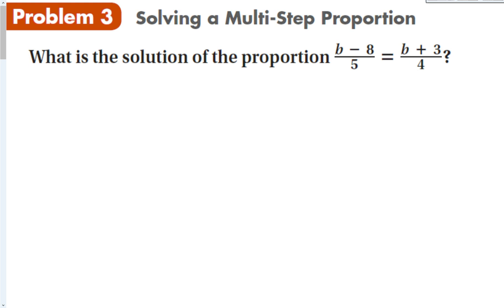Get into the habit, if you see a proportion, to use cross-products, especially if you have a proportion that looks like problem 3. This is a multi-step proportion. Cross-multiplying is the best way to solve this. It's going to be the most efficient way, and probably the only way that you could actually get to the answer. We're going to start with my equation, b minus 8 over 5 is equal to b plus 3 over 4. I'm going to multiply these two together first. That's going to be 4 times b minus 8 equals 5 times b plus 3. Now, distribute. So that's 4b minus 32 is equal to 5b plus 15.